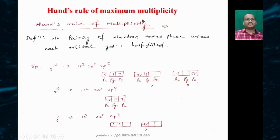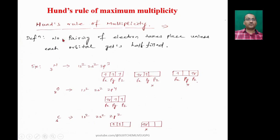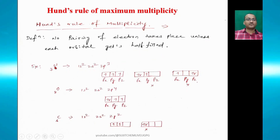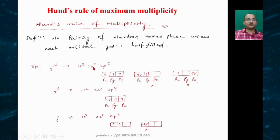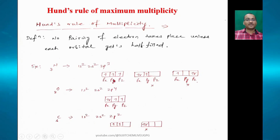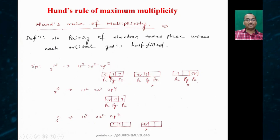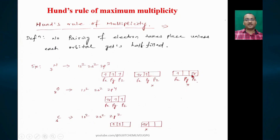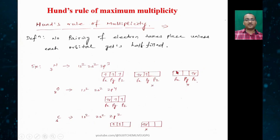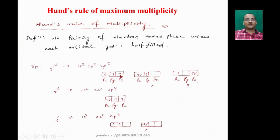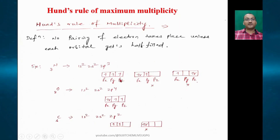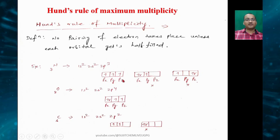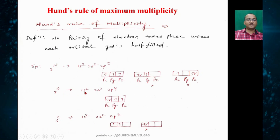Hund's rule of maximum multiplicity: no pairing of electrons takes place unless each orbital gets half-filled. For nitrogen (1s² 2s² 2p³), the three 2p electrons occupy 2px, 2py, and 2pz — one electron in each. We cannot pair them in one orbital before each orbital is half-filled. So the first structure with one electron in each p orbital is correct.